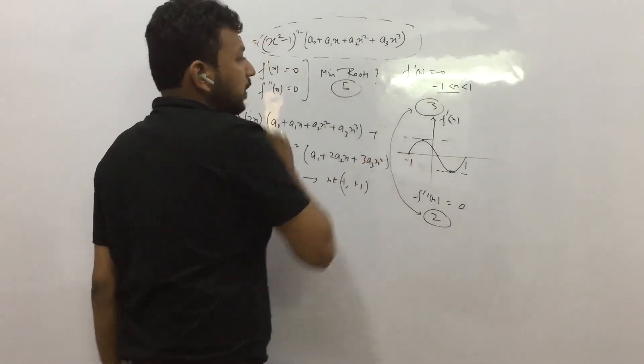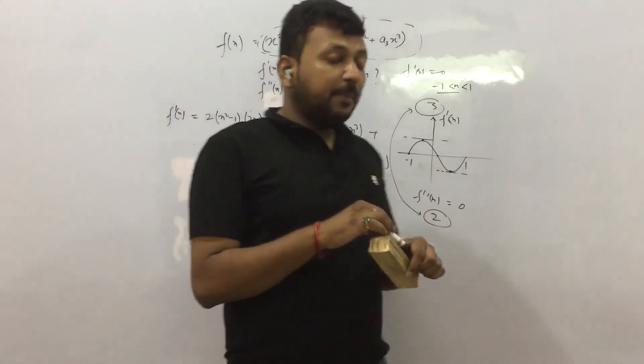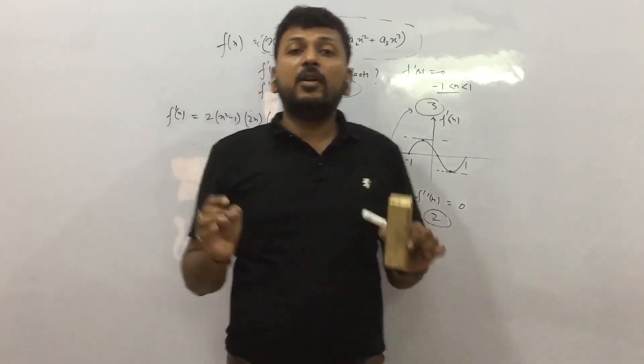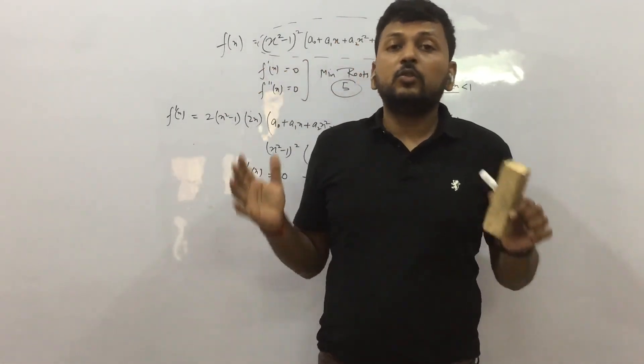That means how many? Total 5 is the answer. 3 and 2. So minimum f'(x) is 0 at 3 points and f''(x) is 0 at 2 points. So 5 is the answer. This is a very good question for JEE.